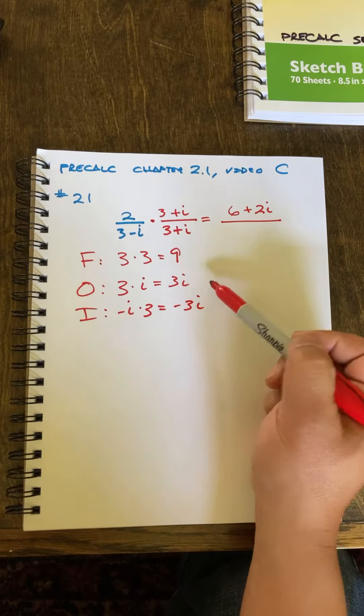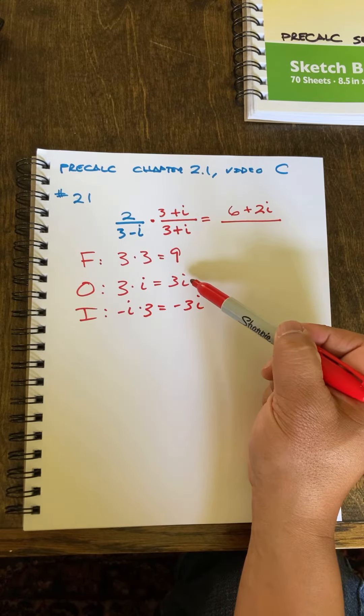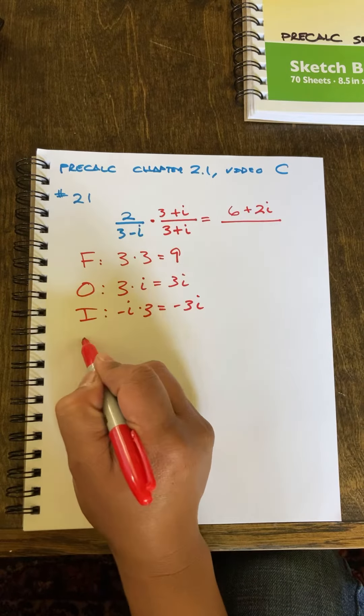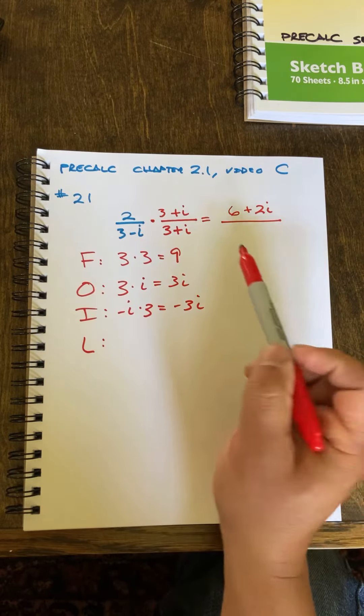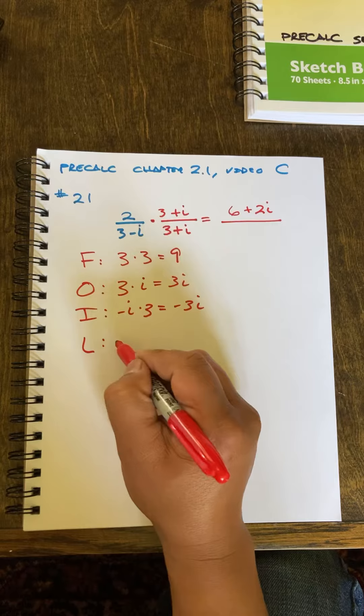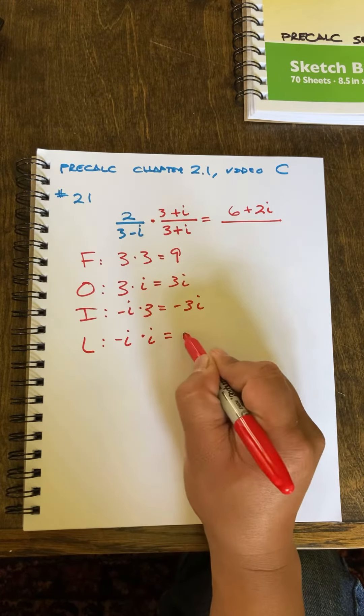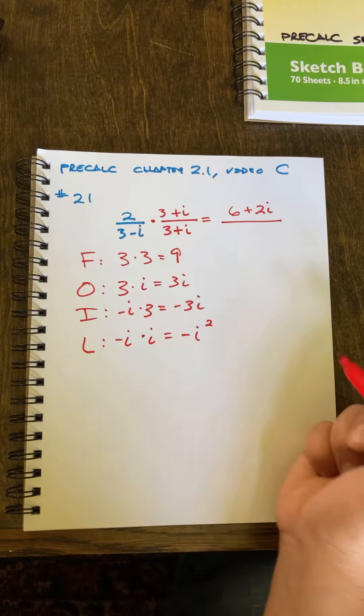And this is why we do the conjugate, because this positive 3i and this negative 3i will cancel out and be 0. And my last term is this negative i times positive i, which will give me negative i squared.